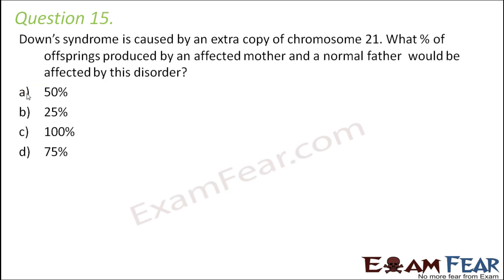Question number 15: Down syndrome is caused by an extra copy of chromosome 21. What percentage of offspring produced by an affected mother and a normal father would be affected by this disorder? Down syndrome is a chromosomal disorder, not a Mendelian disorder. It occurs due to an extra copy of chromosome number 21.